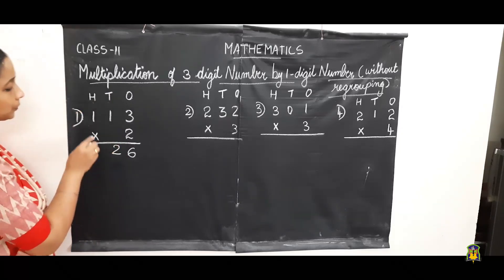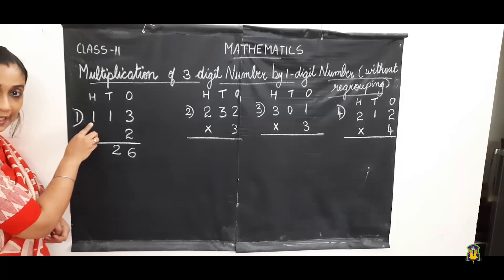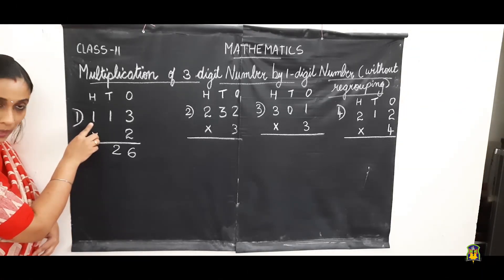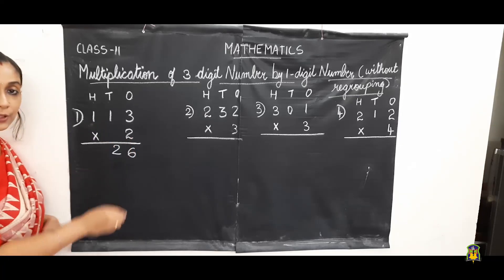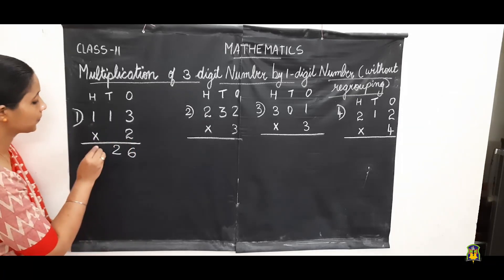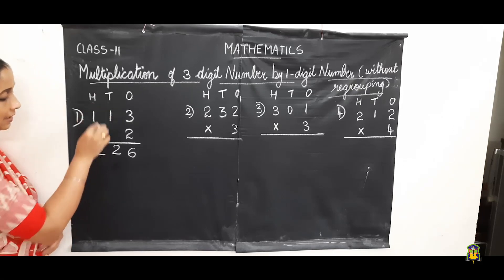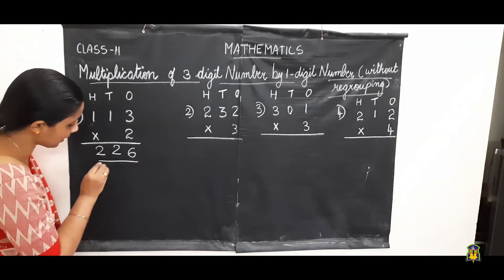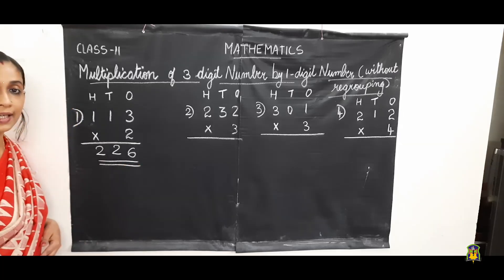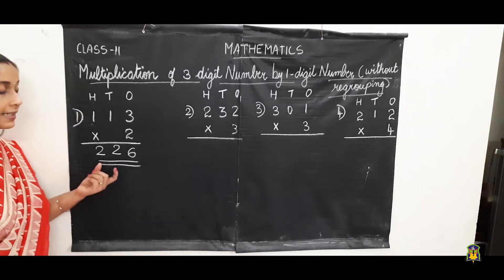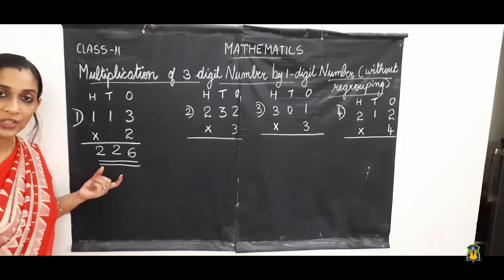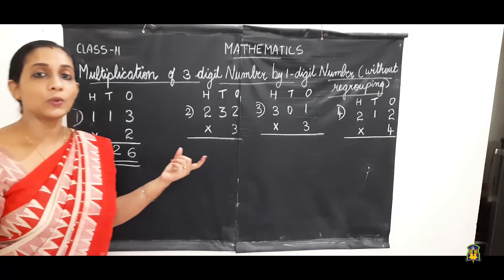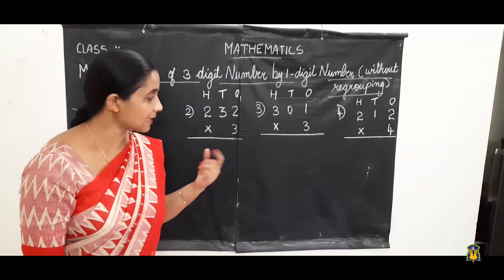Now move on to the next place, that is hundreds place. In hundreds place we have the digit one. One multiplied by two is two, and that we write under hundreds place. So the product is 260. The answer we get after multiplication is called the product. Now let us move on to the next question.